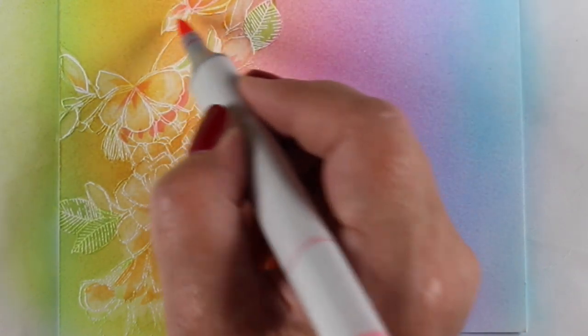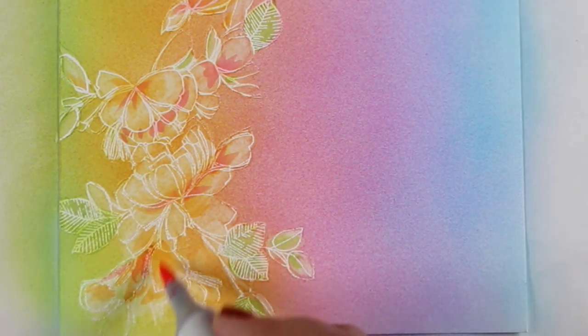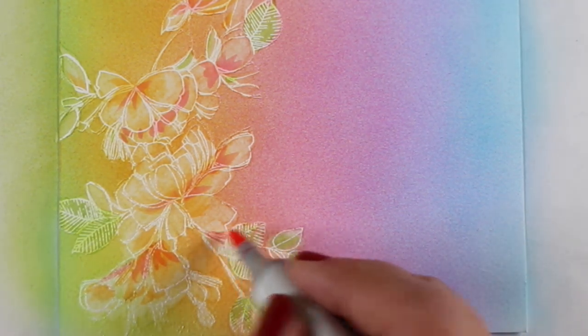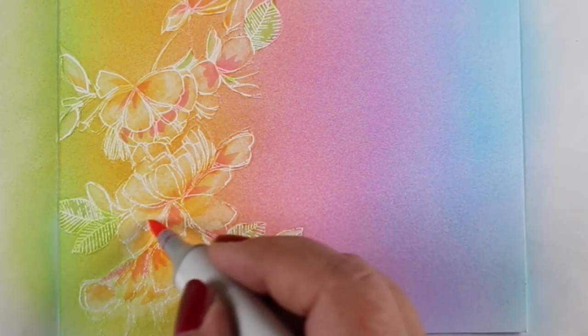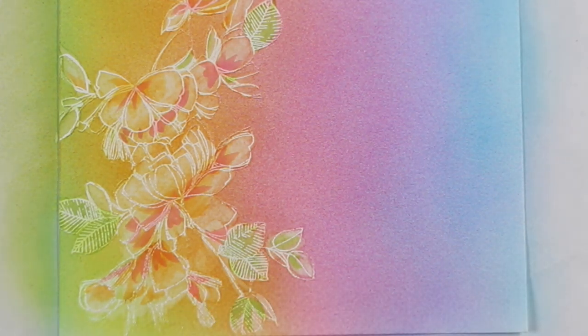And add some color in, go back in with the colorless blender to soften it and to lift those white lines back out. Because some of what you're seeing is the white line disappearing. And when you go back in there with the colorless blender, it'll start to soften everything up.